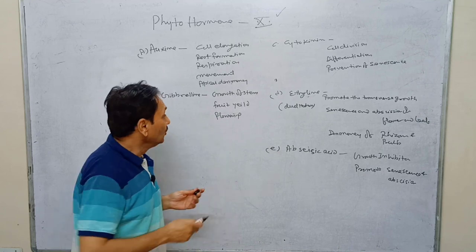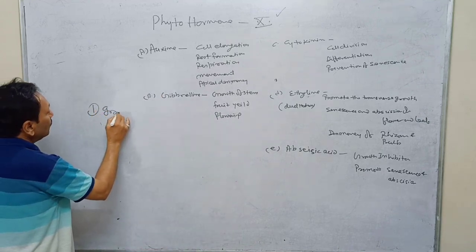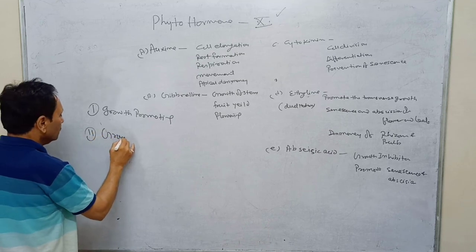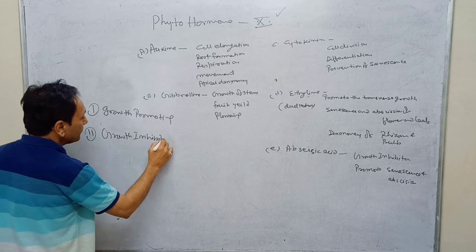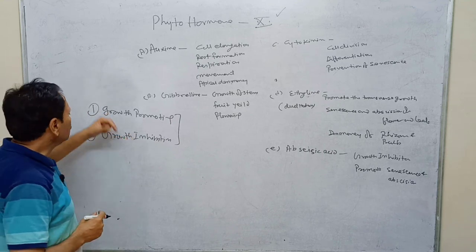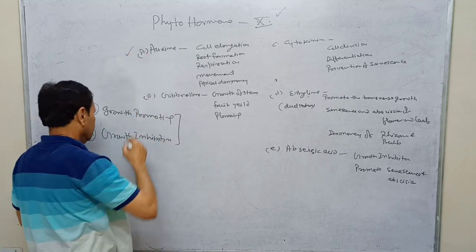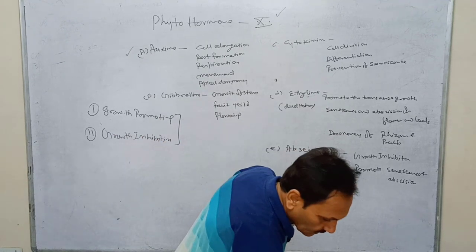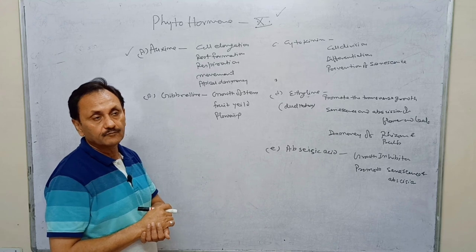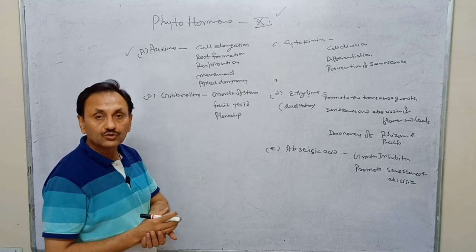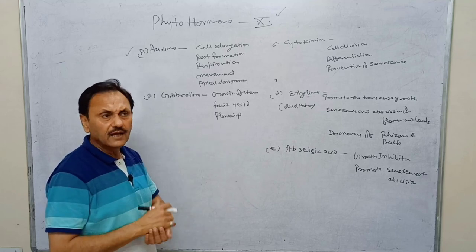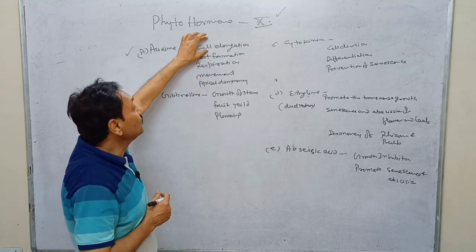Phytohormones are mainly of two types: growth-promoting hormones and growth-inhibiting hormones. Some hormones perform both functions and are called dual-functioning hormones. The first phytohormone is auxin, which is very important in plants because it is responsible for cell elongation. When radicals convert into the root system, there is cell division, cell elongation, and cell maturation — the elongation part is controlled by auxin.